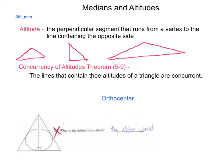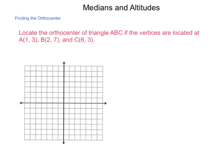Now, with the orthocenter, with the concurrence of these altitudes, finding that location is going to take a little bit of our algebraic skills and graphing capability. So let's take a look at how we can do that given a set of points. Locate the orthocenter of triangle ABC if the vertices are located at the points given here. So let's locate those points on the grid.